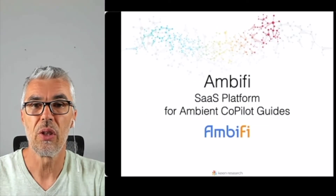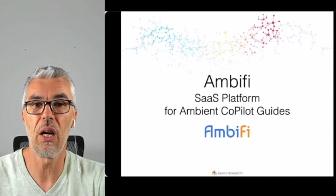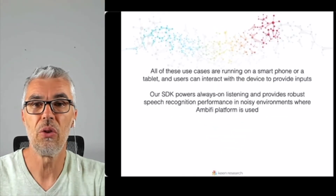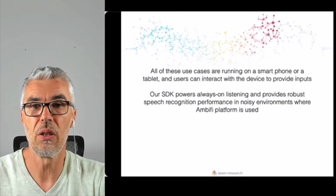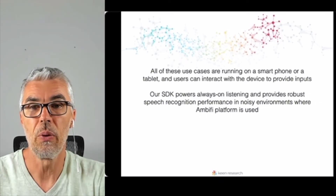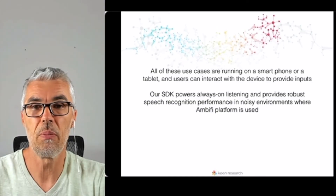Ambi Fi is a software-as-a-service platform that empowers everyone with the ability to create virtual co-pilot guides, smart procedures and protocols, checklists, workflow learning, interactive guidelines, playbooks, and more. All of these use cases run on a smartphone or tablet, and users can interact with the device to provide inputs. With Keen ASR SDK, interaction is completely voice-based. Our SDK powers always-on listening and provides robust speech recognition performance in the noisy environments where the Ambi Fi platform is used.